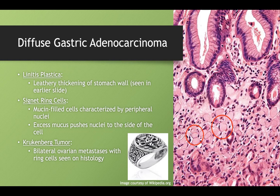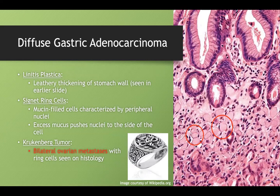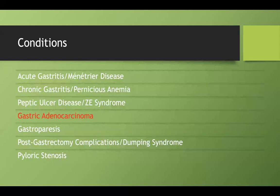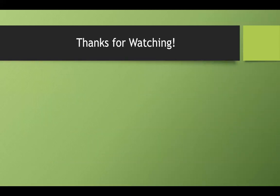On test day, if they ever describe somebody with bilateral ovarian metastases, think about gastric adenocarcinoma — it will usually be given in the context of someone also having primary gastric cancer symptoms. Keep that in mind. Thanks for watching and I hope you enjoyed the video.